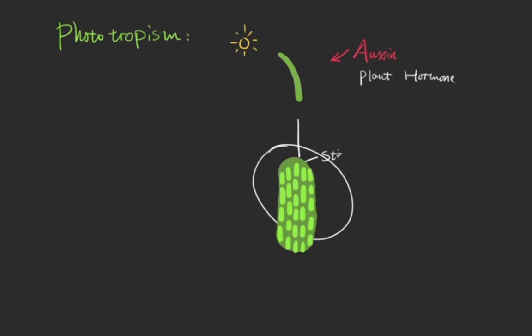So if a plant senses light coming from one direction, auxin will accumulate in the dark side of the stem. Auxin elongates those plant cells in the dark side and the stretched plant cells push the stem towards light.